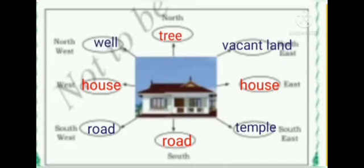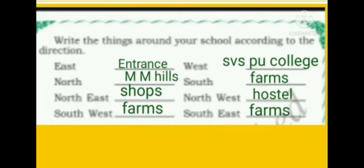Now let's write the things around your school according to direction. This is a sample answer — you can make changes as needed for both activities. For example: East is the entrance, North has hills, North-East has shops, South-West has farms, West has SVS PU College, South has farms, North-West has a hostel, and South-East has farms. The remaining chapter we will see in the next video. Thank you, children.